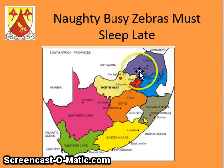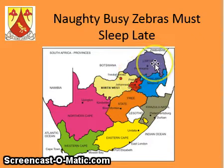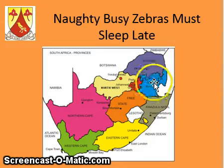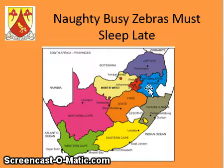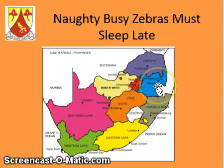Limpopo Province — we've got Polokwane as its capital. Mpumalanga used to be Nelspruit. Have a look, this map is not updated. It is now Mbombela — that is the capital city of Mpumalanga.